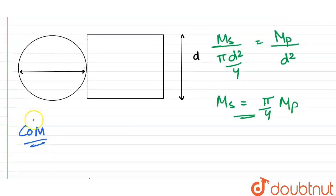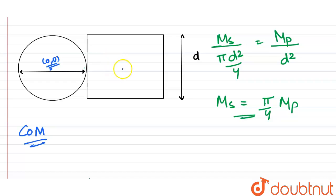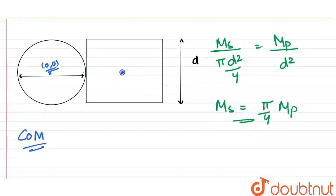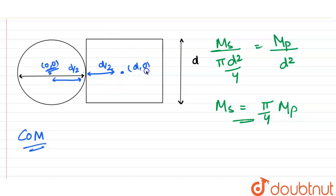For the center of mass, we assume a coordinate system. Let the center of the disc be at (0, 0) — this is the center of mass of the disc. The center of the plate is the center of mass for the plate. Since this distance is d/2 and this distance is also d/2, the center of the plate comes out to be at (d, 0).